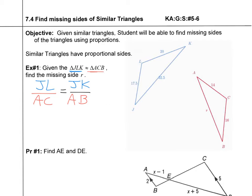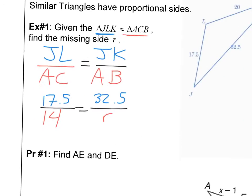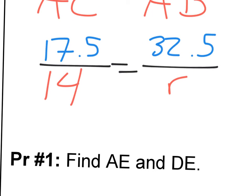Now let's fill in what we know. JL is 17.5, JK is 32.5, AC is 14, and AB is R. Now I just have a simple proportion to solve.